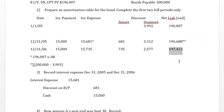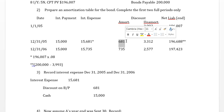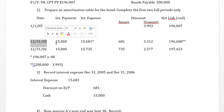Part 3 asks us to record interest expense for 2005 and 2006. I can pick the numbers right off the table. Every time I record interest expense, I amortize discount — the interest expense and discount amortized amounts come directly from the table. Since it's an interest payment date, I credit cash for $15,000.